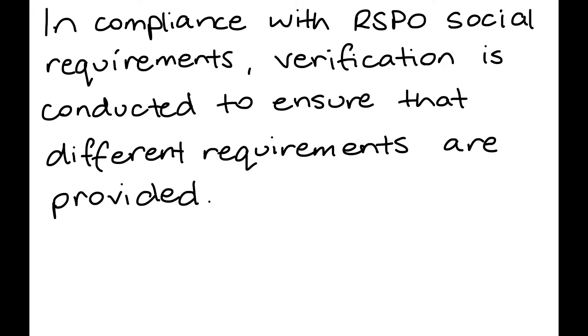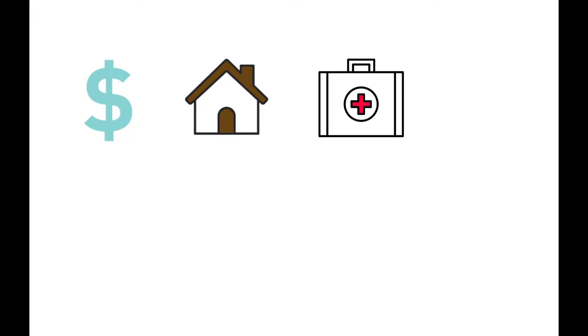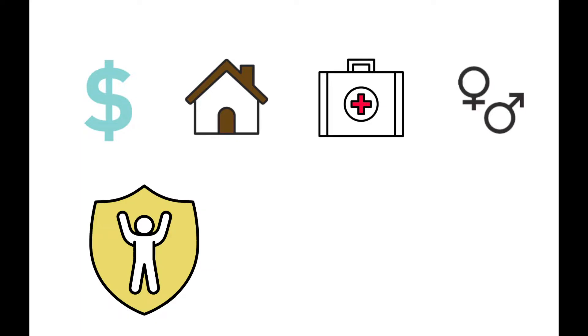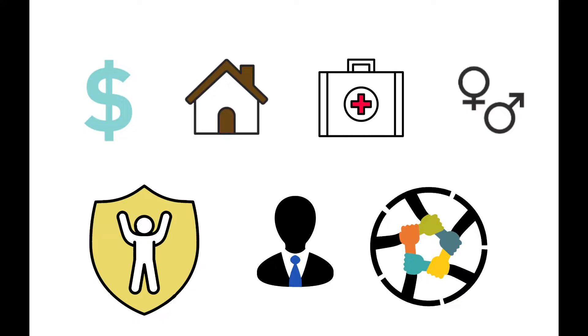In compliance with RSPO social requirements, verification is conducted to ensure that different requirements are provided, such as workers' pay and benefits, working and living conditions, health and safety, gender inclusivity, child protection from labour, recruitment practices, and community wellbeing.